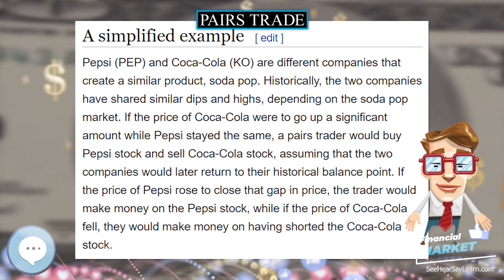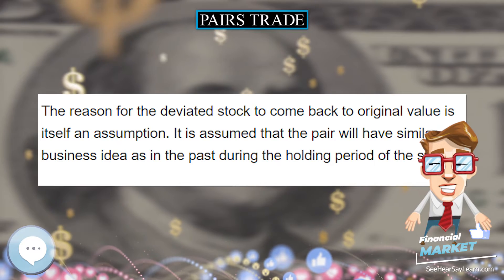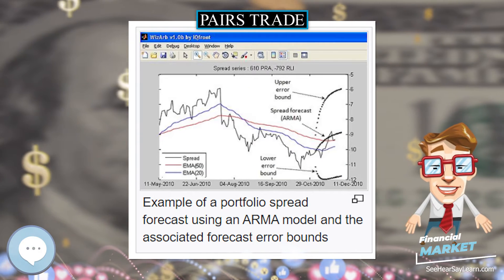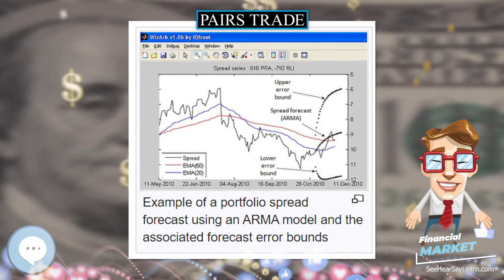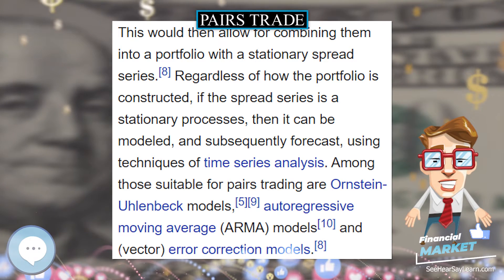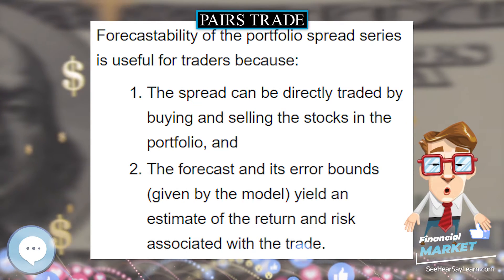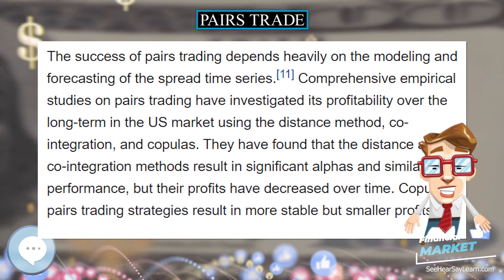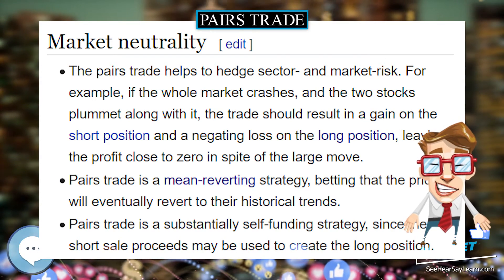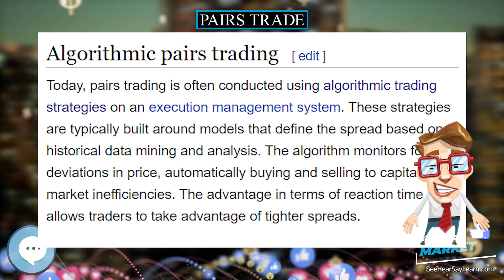Model-based pairs trading. While it is commonly agreed that individual stock prices are difficult to forecast, there is evidence suggesting that it may be possible to forecast the spread series of certain stock portfolios. A common way to attempt this is by constructing the portfolio such that the spread series is a stationary process. To achieve spread stationarity in pairs trading, where portfolios only consist of two stocks, one can attempt to find co-integration relationships between the two stock price series, which generally show stationary correlation. This irregularity is assumed to be bridged soon, and forecasts are made in the opposite direction of the irregularity, allowing for combining them into a portfolio with a stationary spread series.